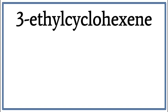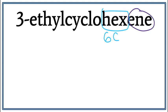Let's draw the structure for 3-ethyl-cyclohexene. Hex tells us that there are six carbons present in the longest carbon chain. Ene tells us that there is a double bond present between the carbons. We see the word cyclo, meaning that the six carbons are arranged in a ring. Every time we see the word cyclo, we have to draw a ring. When we draw six carbons in a ring, we end up with a hexagon. So let's draw a hexagon.